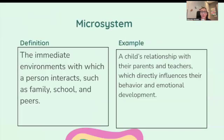Let's start with microsystem. This is the immediate environments with which a person interacts, such as family, school, and peers. For example, a child's relationships with their parents and teachers directly influences their behavior and emotional development.